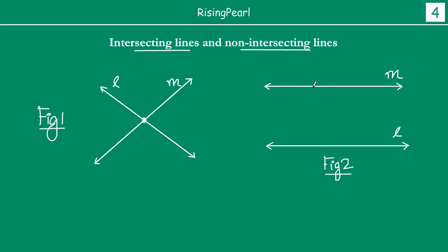So if you notice, there is a definition of parallel lines. You can take line M, and if you take any point on it — let's call these points P1, P2, P3 and P4 — you find the distance of each point from line L. We were talking about coordinates in our series 3, coordinate geometry basics, where we find the distance of a point from the x-axis and y-axis.